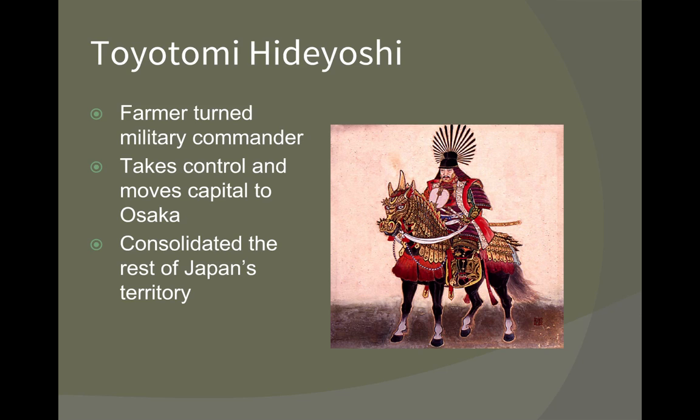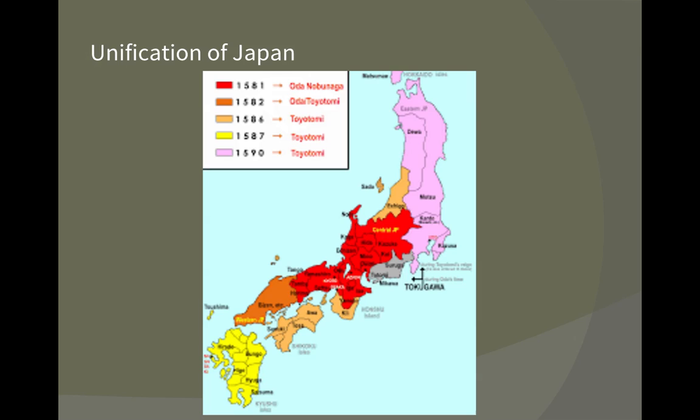When Hideyoshi died in 1598, the center of power shifts to Edo, which was a small fishing village at the time but eventually became Tokyo. Looking at the map, all the land shown in red is what Nobunaga was able to consolidate, and after that Toyotomi was able to ultimately get the rest of Japan under his control.